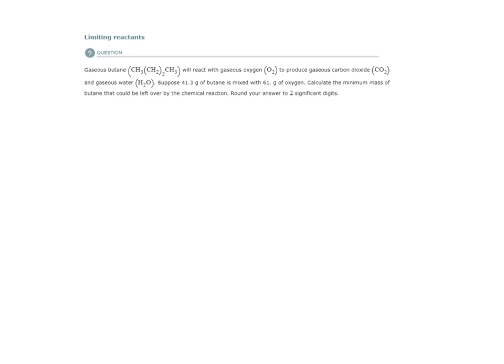Alright, here we have our first example from the limiting reactants topic, and we have gaseous butane reacting with gaseous oxygen to produce carbon dioxide and gaseous water.